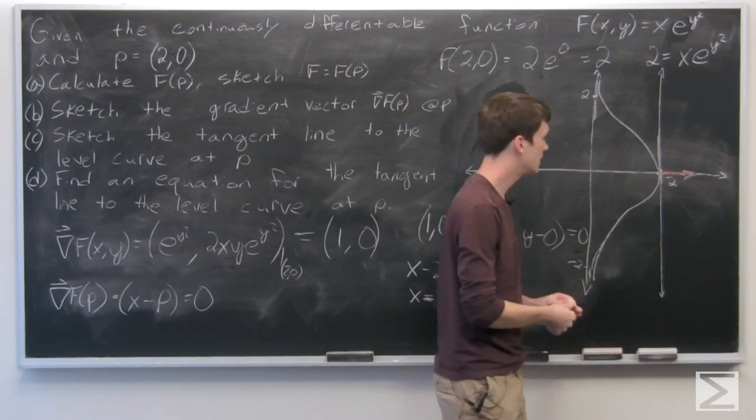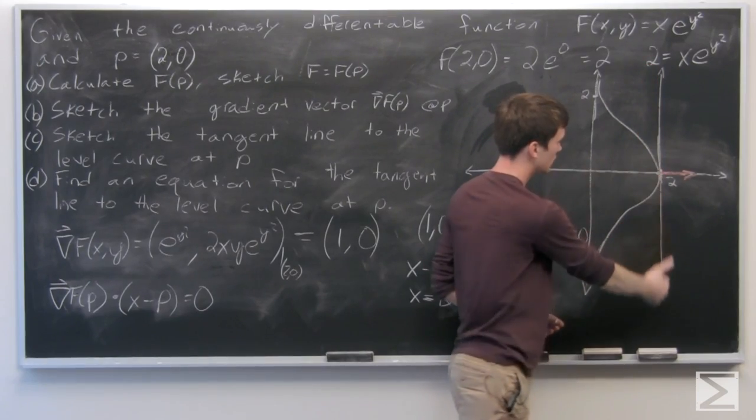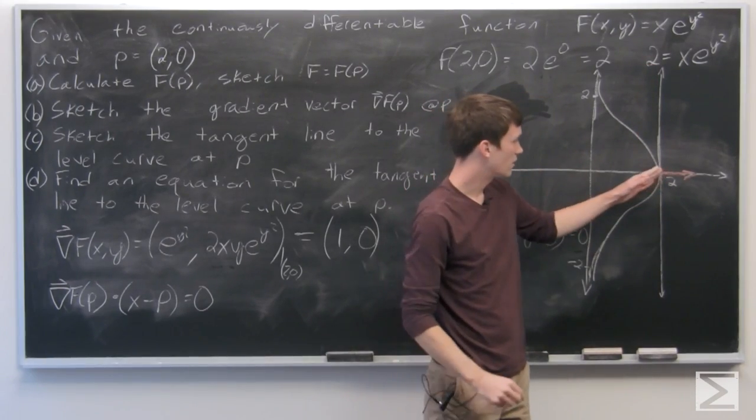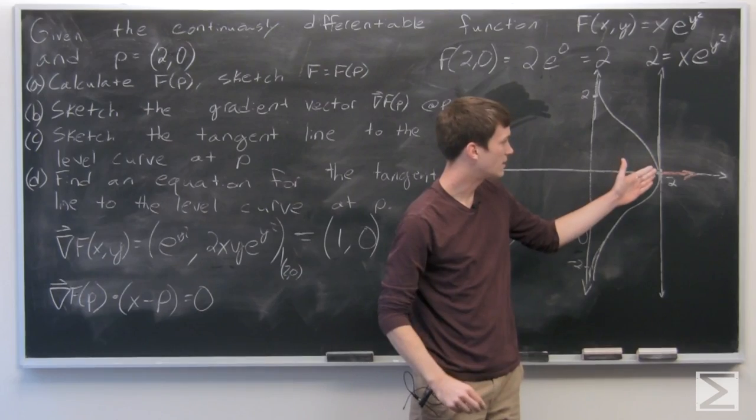So as we can see, or we might have guessed, the tangent line is the vertical line at x = 2.